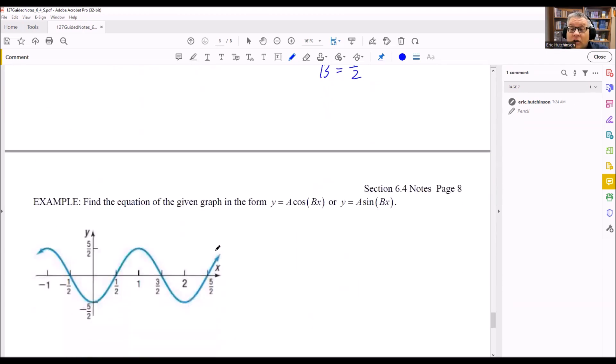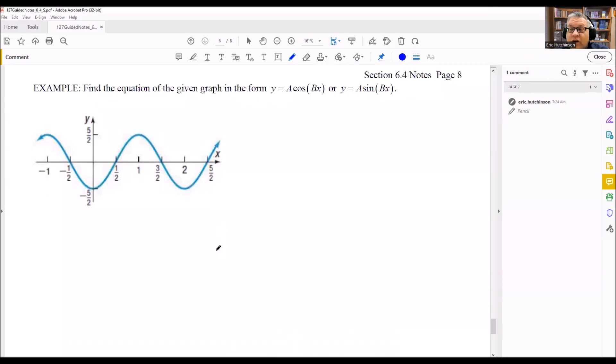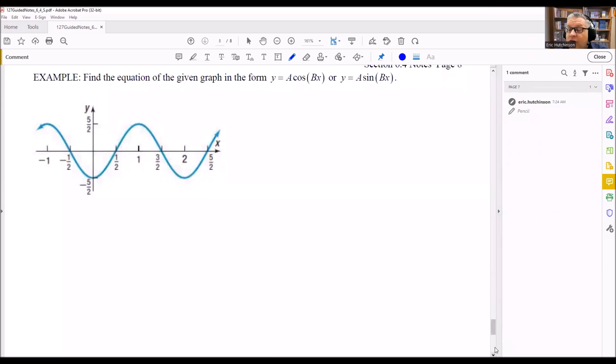So let's do another one. This one we talked about earlier. That's going to be a cosine graph because the graph does not go through the origin. So since it does not go through the origin, we know it's a cosine graph. Now, we're going to do the same process as we did before. We first need to find out what the period is.